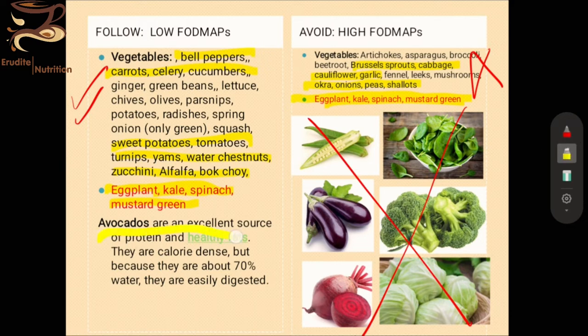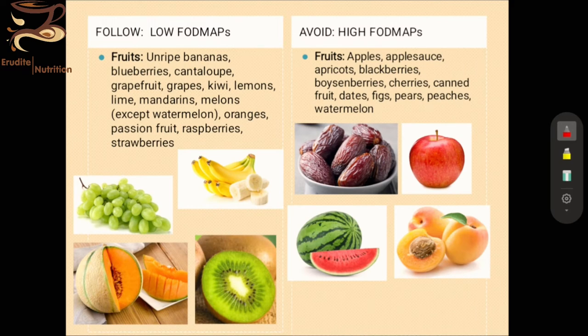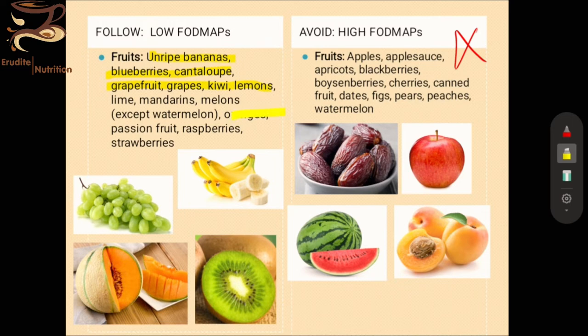Avocados are an excellent source of healthy fats and proteins and can be added to your diet — they are very calorie-dense and easy to digest. However, in countries like India where avocados cost around 600 rupees per kg, you can survive without them. For fruits, if a fruit is not listed in either the low or high FODMAP category, it should be avoided. Allowed fruits include unripe or freshly ripe bananas, blueberries, cantaloupes, grapefruit, kiwi, lemon, mandarins, melons (except watermelon), oranges, raspberries, and strawberries. Apples, apricots, cherries, canned fruit, dates, figs, and watermelon are to be avoided.